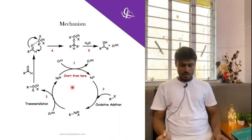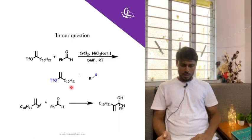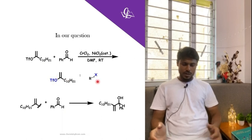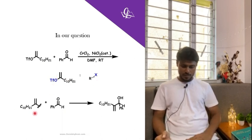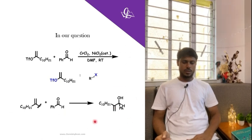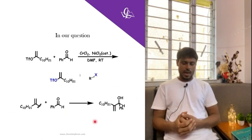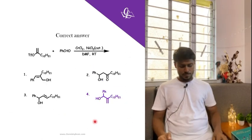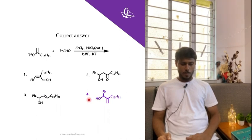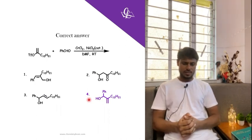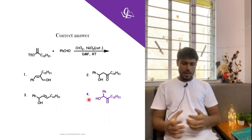Going back to our actual question, we have the aldehyde part and the alkyne part with the OTf leaving group. These two will undergo the coupling reaction, and we will get the coupled product. This is straightforward if you know the reaction. Our correct answer is option four.